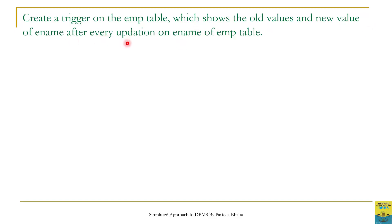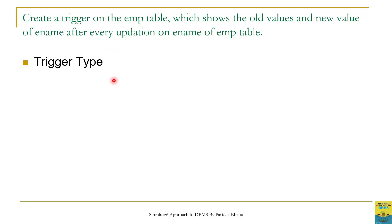It means we have to create a trigger on the employ table and it should fire during updation on the ename column. The trigger has to display both old as well as new values of ename after every update operation. Let us first decide about trigger type before writing its code. Since this trigger should perform its action after every update operation on the ename column, the trigger timing should be AFTER type.